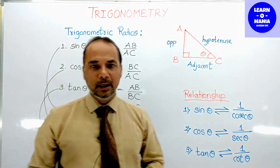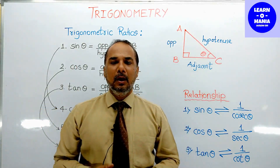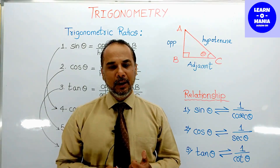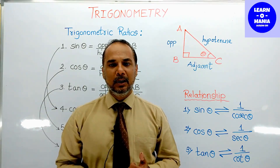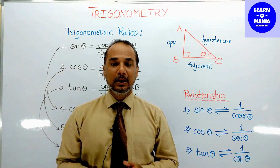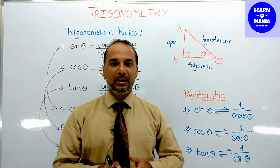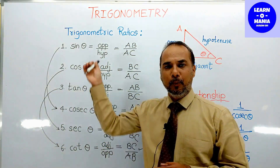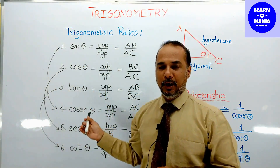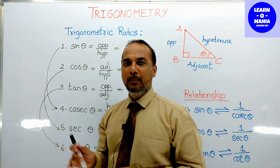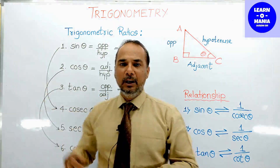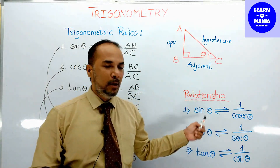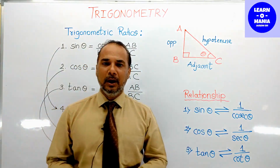So in today's video you need to remember 6 trigonometric ratios — their names, and how to find them. Opposite, hypotenuse, adjacent — these are important. Also remember the inverse relationships between the first three and the next three.